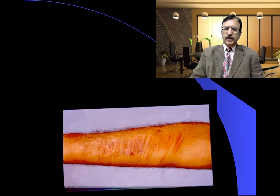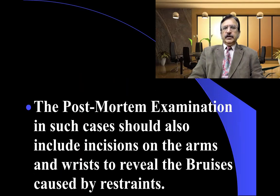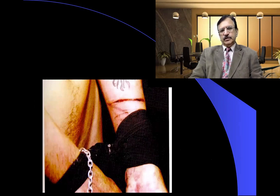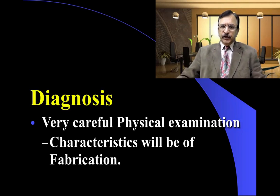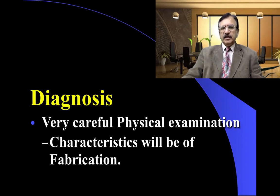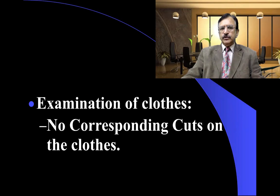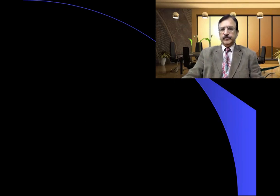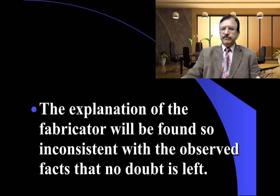A photograph shows multiple tentative or fabricated wounds on the front of the forearm. Post-mortem examination in such cases should include incision on the arms and wrist to reveal bruises caused by restraints. Diagnosis requires careful physical examination showing characteristics of fabrication. Examination of clothes will show no corresponding cuts. The history will not coincide with the injuries, and the fabricator's explanation will be found so inconsistent with observed facts that no doubt will be left.